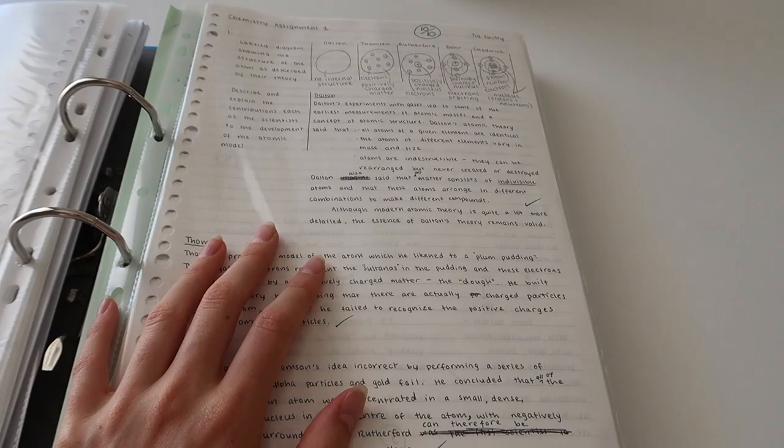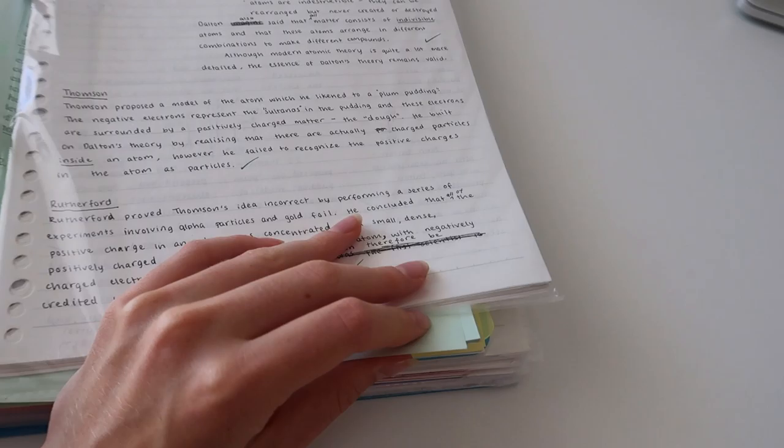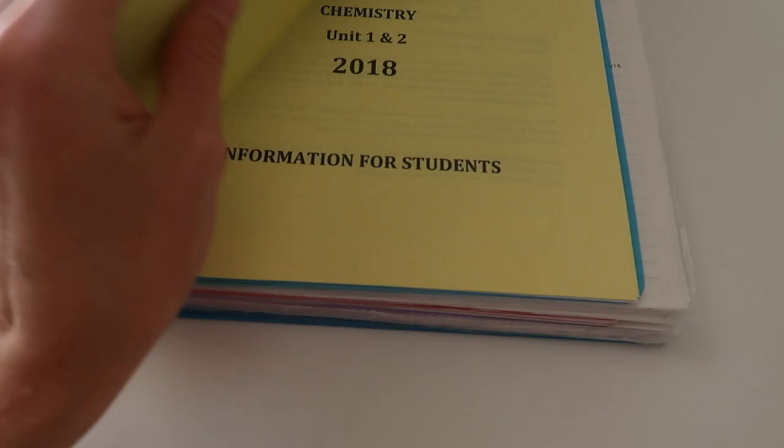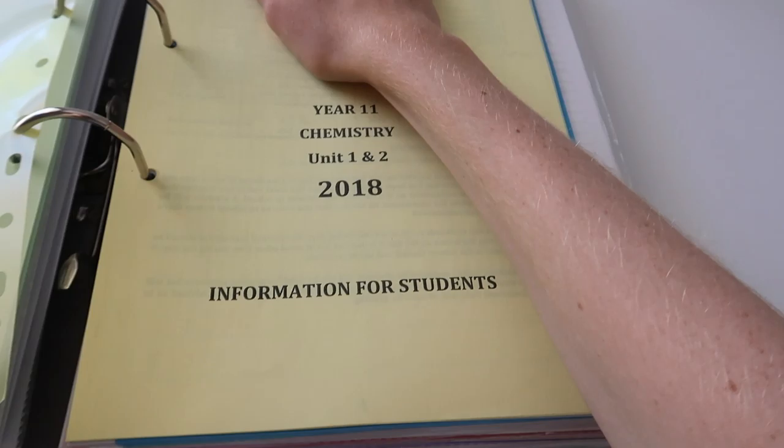And then this green thing here that you can see behind it were all of the assignment information sheets. So that's all that. And then we have a divider and this has my school name up here, but this next section, so that was all the assessed pieces of work.